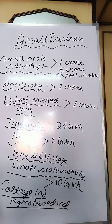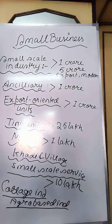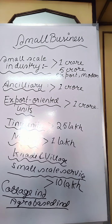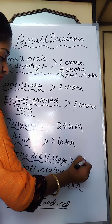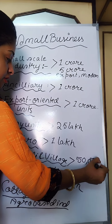Then comes Khadi and village industries. These are industries located in rural areas which produce goods or services, with or without power. The fixed capital investment per head worker does not exceed 50,000 — the criteria is up to 50,000.